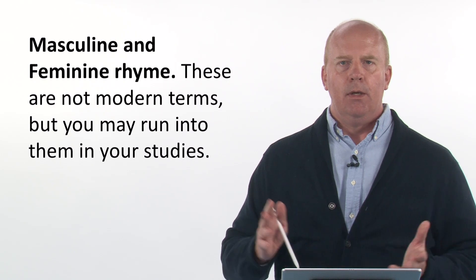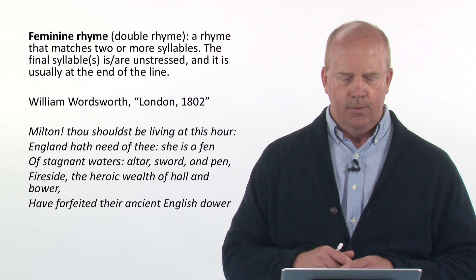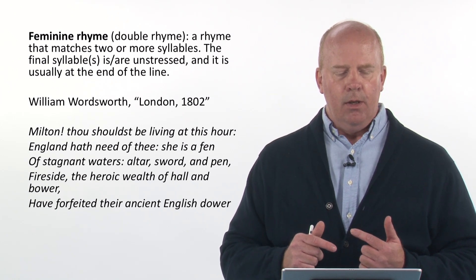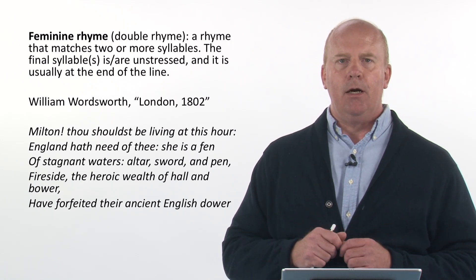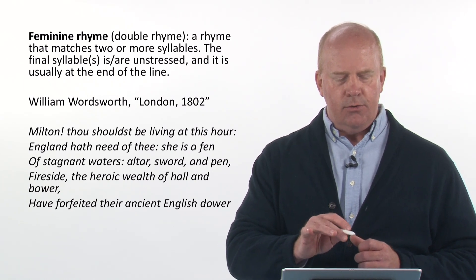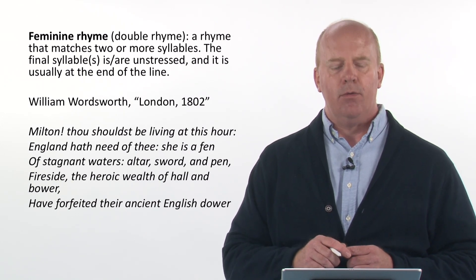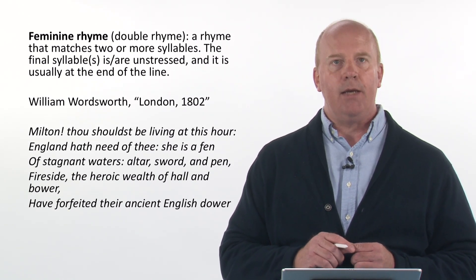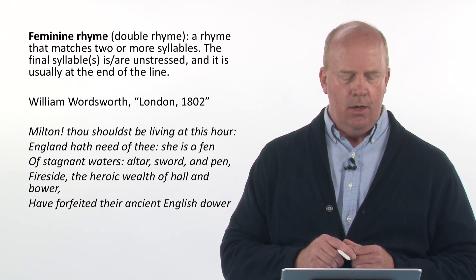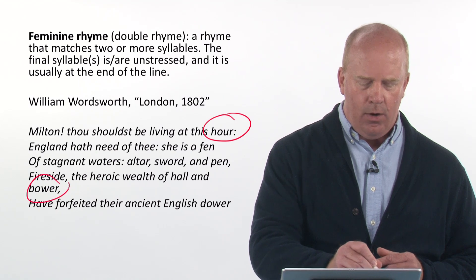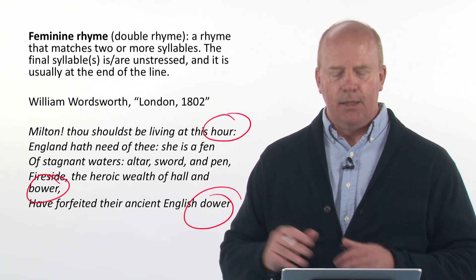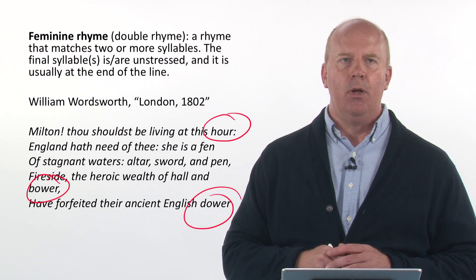Masculine and feminine rhyme — these are not modern terms, but you may encounter them in your studies. A feminine rhyme, sometimes called a double rhyme, matches two or more syllables where the final syllable is unstressed. From William Wordsworth's 'London, 1802': 'Milton! thou shouldst be living at this hour; England hath need of thee: she is a fen of stagnant waters: altar, sword, and pen, fireside, the heroic wealth of hall and bower, have forfeited their ancient English dower.' 'Hour,' 'bower,' and 'dower' are stressed on the second-to-last syllable — that's an example of a feminine rhyme.